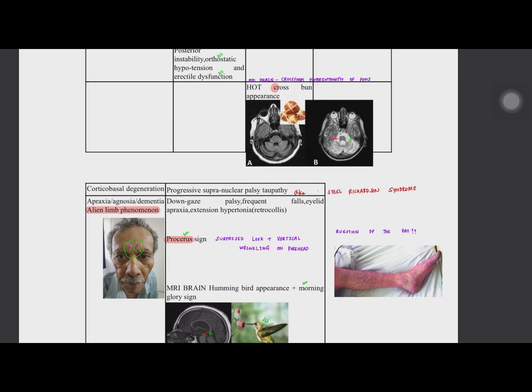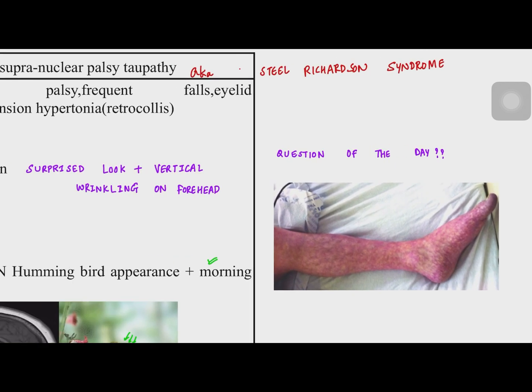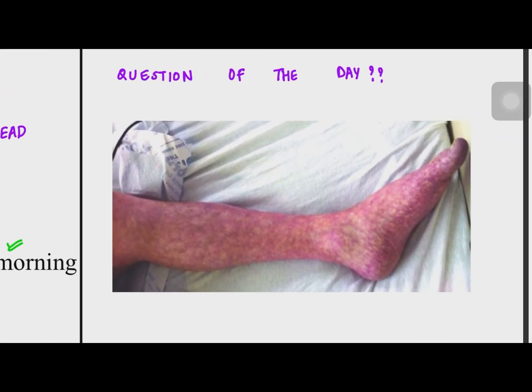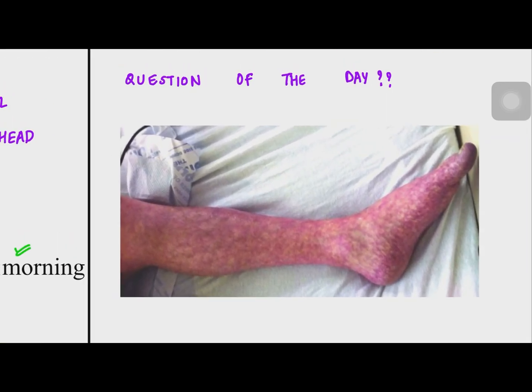That covers all five types of Parkinson plus syndrome. As a question for you: name the drug that causes the side effect shown in the image — this drug is also used in the treatment of Parkinson's disease. Thank you.